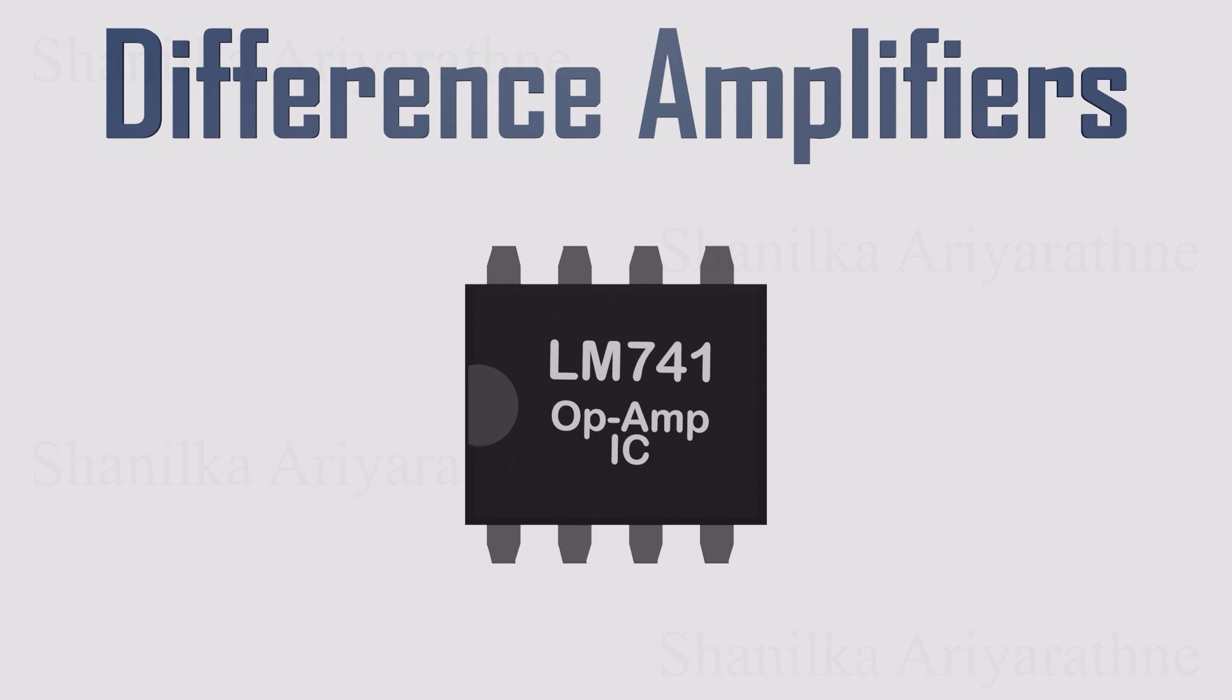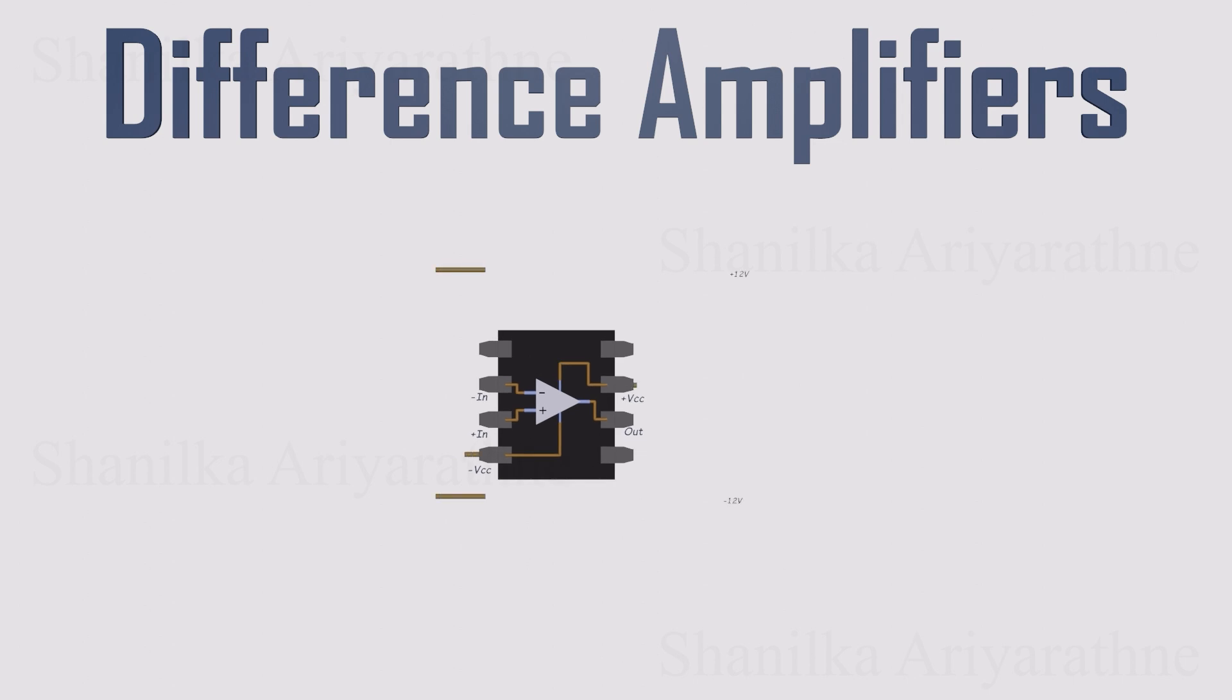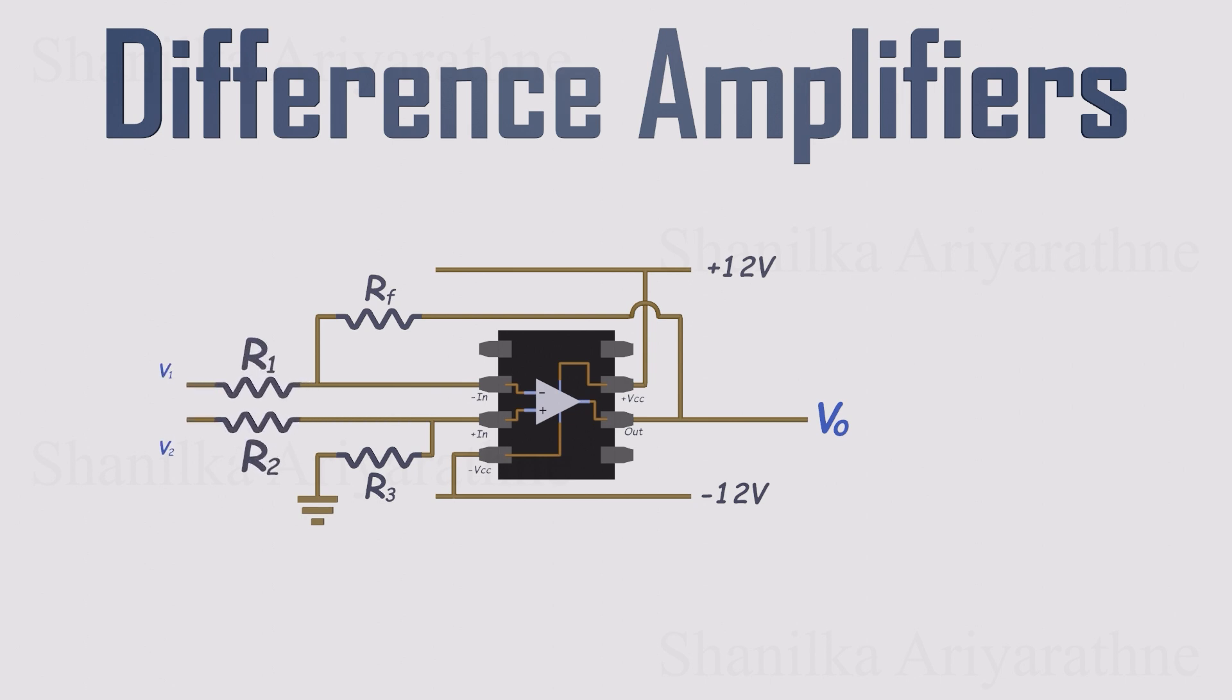The good news? It's surprisingly easy to build. All you need is an op-amp chip and a few resistors. Power it up, put a feedback resistor from the output back to the inverting input, and connect another resistor from the non-inverting input down to ground. Then feed in your signals. One goes into the inverting input through its resistor, and the other goes into the non-inverting input through its resistor. That's the entire circuit.